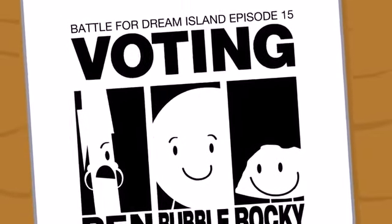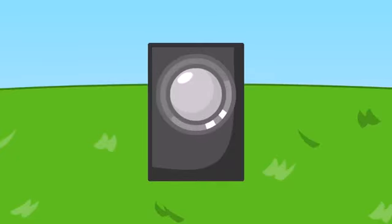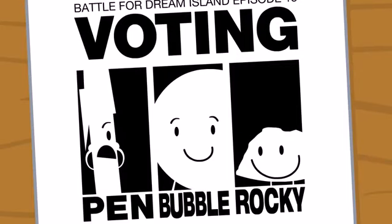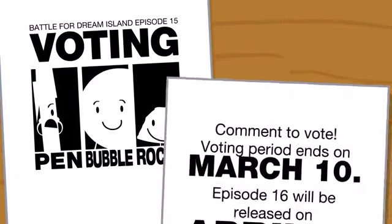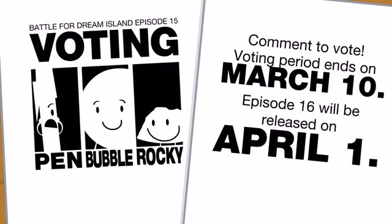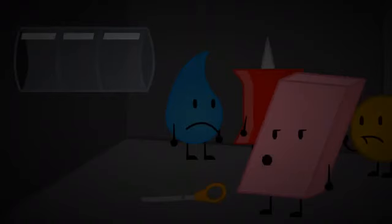So that means that Pen, Bubble, and Rocky fall into the danger zone. So the voting will only be between the three of them. People vote off which one you think should be eliminated from the battle for dream island. So I guess they aren't sending us any more tacos.